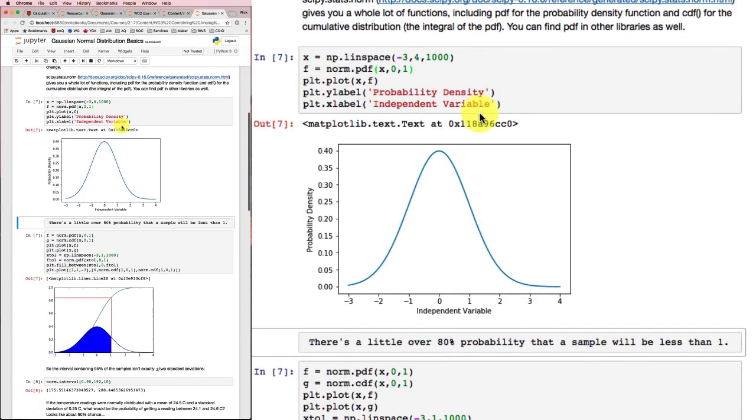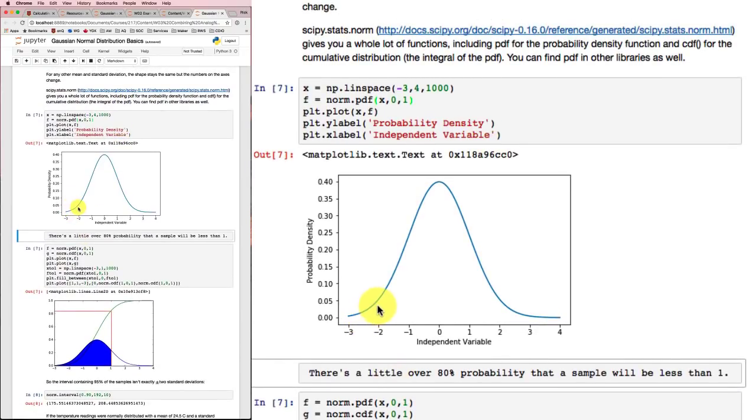So if I took the integral between minus 2 and minus 1 of this PDF function, then I'd have the area under the curve in this region. And that would be the probability of getting a sample in between minus 2 and minus 1. Not very big compared to the probability of all the other possibilities. So that's the notion, the idea of a probability density function.